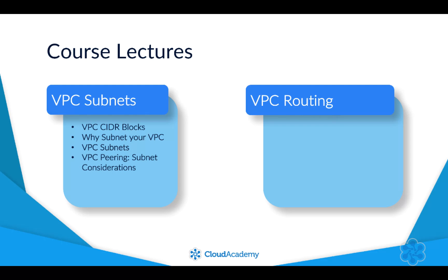Next, we'll look at VPC peering and its subnet considerations — this lecture focuses on considerations when architecting your subnets in different VPC peering configurations. Following this, we'll look at flow logs and how to monitor the ingress and egress network traffic of each of your VPC subnets using flow logs. And to round up the subnet section, I'll create a VPC and a number of subnets via a demonstration.